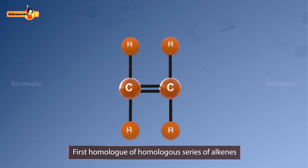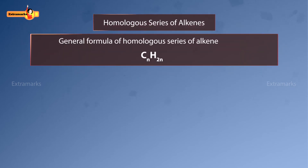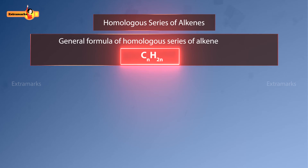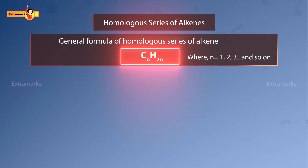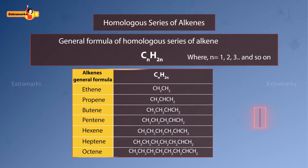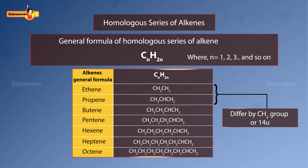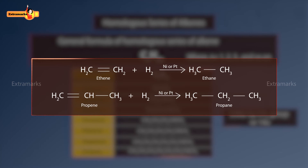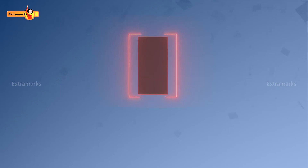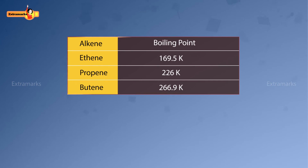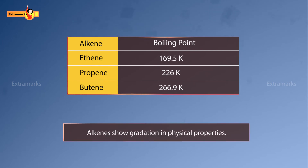Hence ethene is the first homolog of the homologous series of alkenes. All alkenes can be represented by the general formula CₙH₂ₙ, where n represents the number of carbon atoms with values 2, 3, and so on. Each successive member differs by a CH₂ unit, or 14u. All alkenes show similar chemical properties — for example, all of them react with hydrogen in the presence of a catalyst like nickel or platinum to form alkanes. They also show gradation in physical properties.